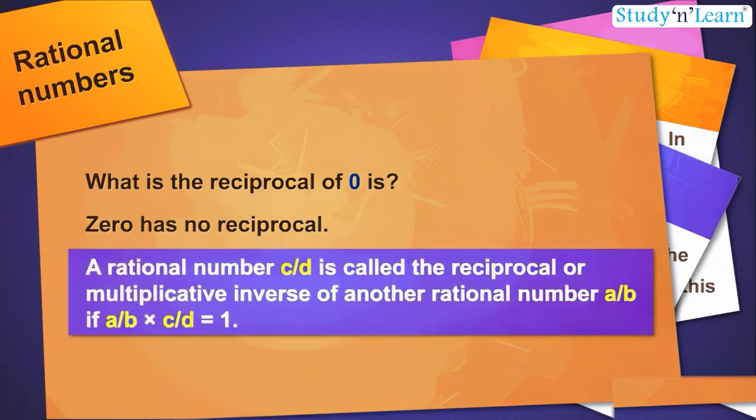We say that a rational number c by d is called the reciprocal or multiplicative inverse of another rational number a by b if a by b into c by d is equal to 1.